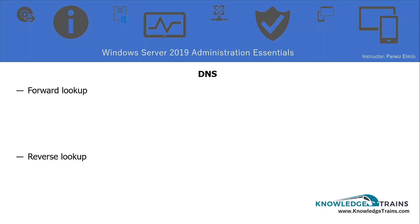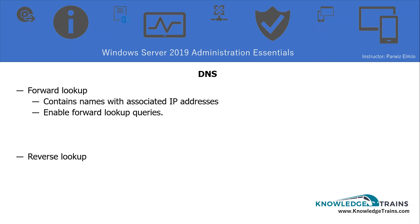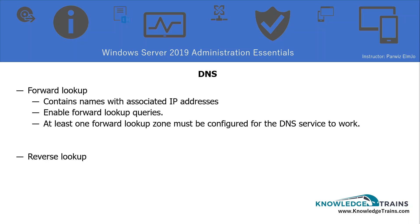When it comes to DNS, DNS actually has two zones: forward lookup zone and reverse lookup zone in Windows Server. The forward lookup zone contains names with associated IP addresses. For example, if you have a machine called machine1, it will contain the name of the machine and the associated IP address. It enables forward lookup queries, so when you type ping host1 and enter, it converts that name into an IP address. At least one forward lookup zone must be configured for DNS to work.